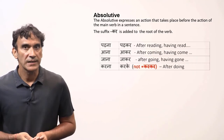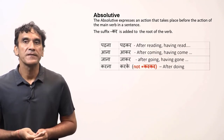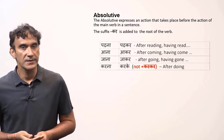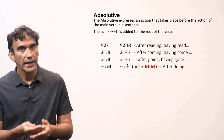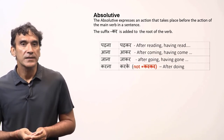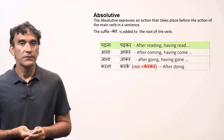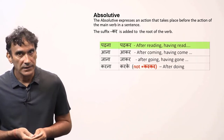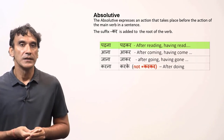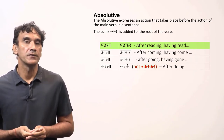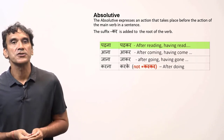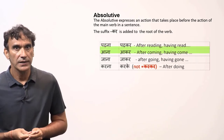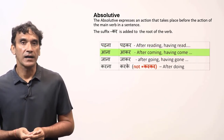Now let's take the absolutive. The absolutive expresses an action that takes place before the action of the main verb in a sentence. It is formed by adding the suffix 'kar' to the root of the verb. For example, 'padna' (to read) → the absolutive form is 'padkar', meaning 'after reading' or 'having read'.